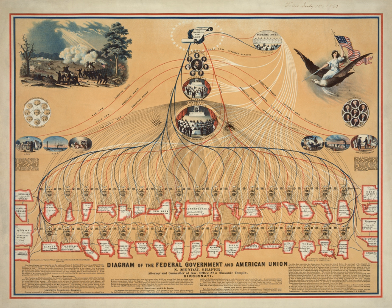For example, while the legislative branch has the power to create law, the executive branch under the president can veto any legislation — an act which, in turn, can be overridden by Congress. The president nominates judges to the nation's highest judiciary authority, the Supreme Court, but those nominees must be approved by Congress. The Supreme Court, in turn, can invalidate unconstitutional laws passed by the Congress.